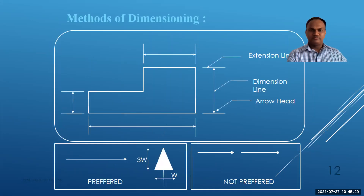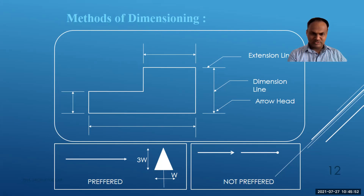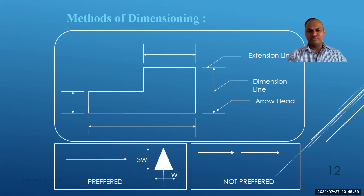The extension line is used to extend a part in order to show its dimension. The dimension line runs between the extension lines, and arrowheads indicate the extent. If the width of an arrowhead is W, the length should be three times W — that is to be remembered. The type of arrowhead shown as preferred should be used; the non-preferred type should be avoided.